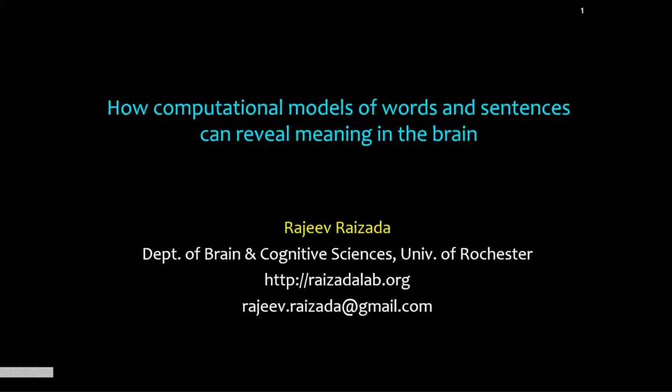The speaker today is Dr. Rajiv Rasaida. He's an assistant professor in the Department of Brain and Cognitive Sciences at the University of Rochester. His research focuses on the use of different pattern recognition algorithms to investigate the structure of neuronal representations in the human brain, with emphasis in linguistic meaning. Today he will be talking to us about computational models of words and sentences to reveal meaning in the brain. Please help me welcome Dr. Rasaida.